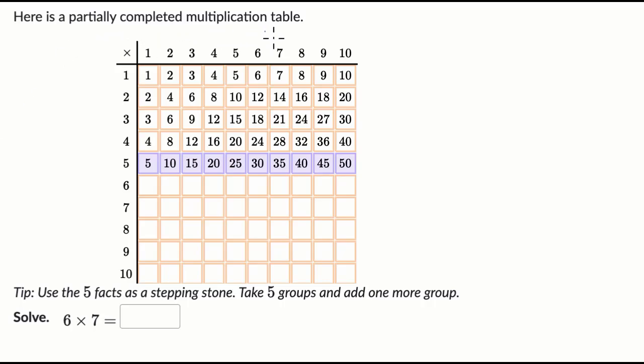Here is a partially completed multiplication table. We can see the one times tables, then the twos, threes, fours, goes all the way to fives. And they want us to solve 6×7.